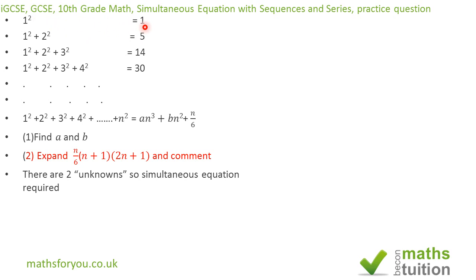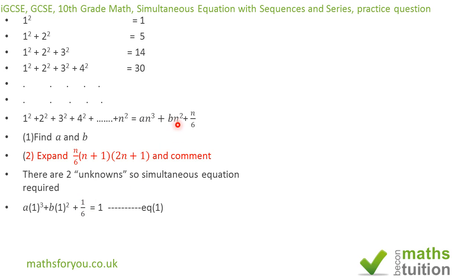Note that we have n values throughout: n is 1 for the first case, n is 2 for the second, n is 3 for the third, and n is 4 for the fourth. For n equals 1, we substitute to get a(1 cubed) plus b(1 squared) plus 1 over 6, and for n equals 2 we get a(2 cubed) plus b(2 squared) plus 2 over 6.